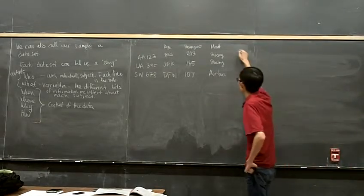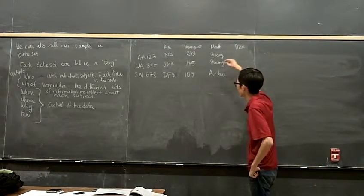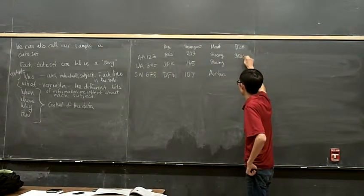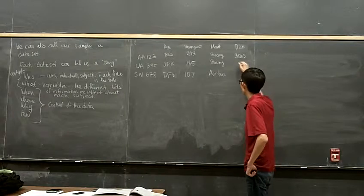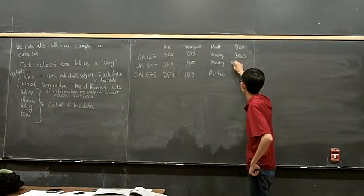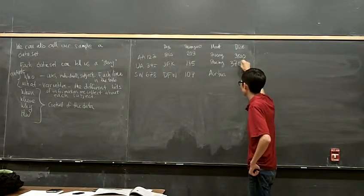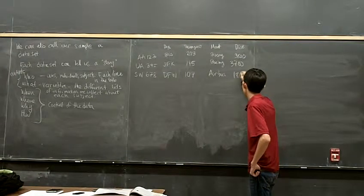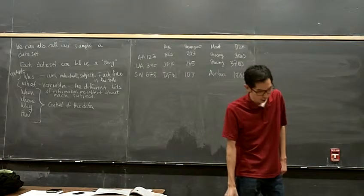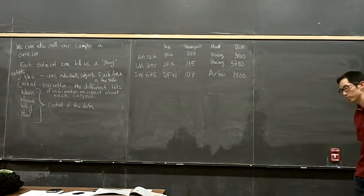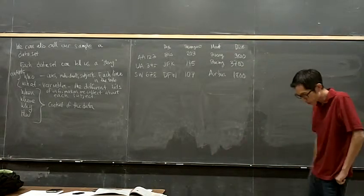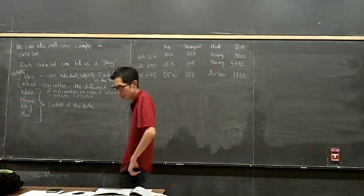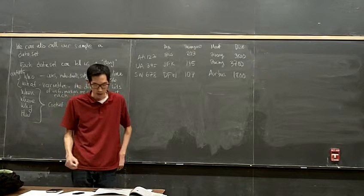Let's say distance to the destination: this is 3,800 miles, this is 3,700, and this is 1,800 — again, just making things up. So this is just some fictional dataset, and these are the next three flights leaving from LAX or something.